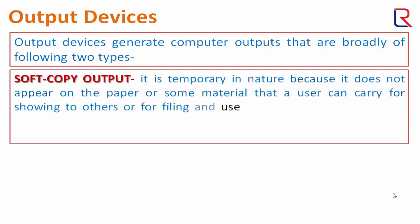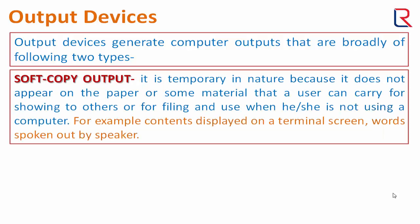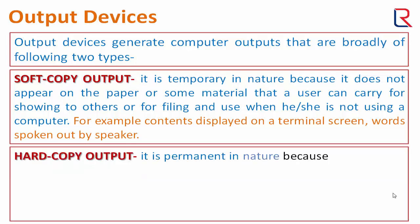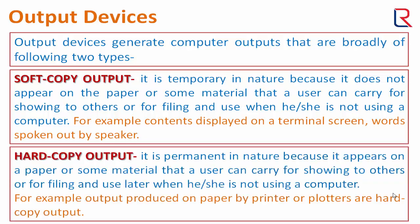Soft copy output is temporary in nature because it does not appear on paper or some material that a user can carry for showing to others or for filing and use when not using a computer. For example, contents displayed on a terminal screen or words spoken out by a speaker.